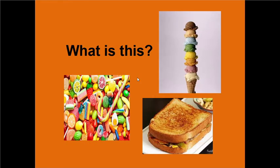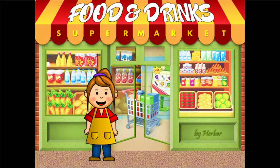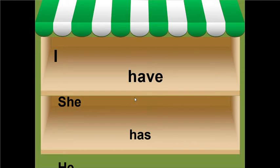Okay, what is this? Very good! And last picture here — what is this? This is a sandwich. Now we say: I have, and she or he has. When I talk about a girl we say she has, and when I talk about a boy we say he has.